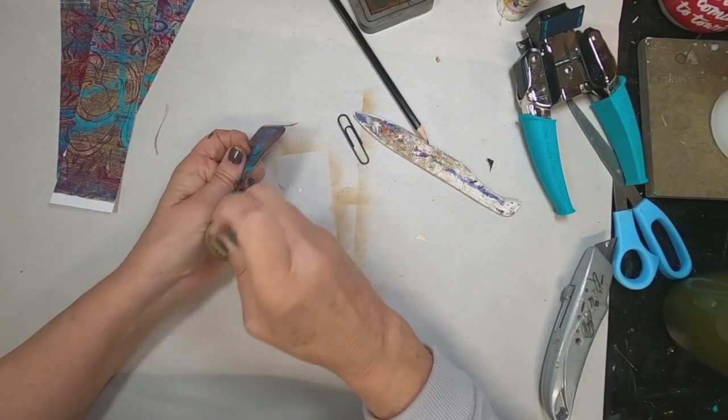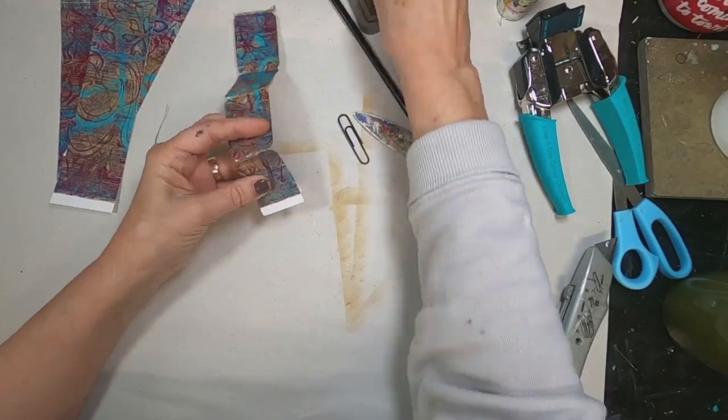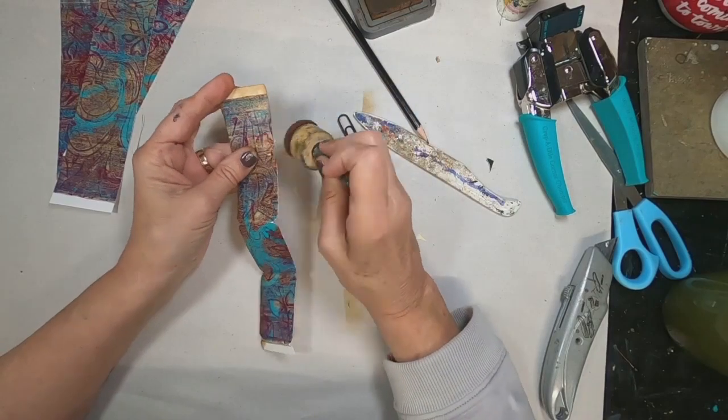I forgot to ink. So I'm going to go back and ink up those edges. I don't like those white edges of that cardstock showing. So I like to ink it with either black or vintage photo, brush corduroy.